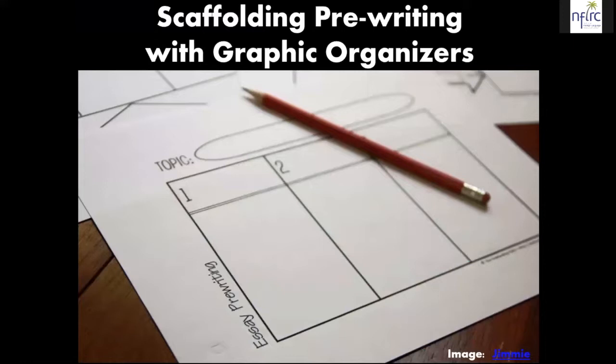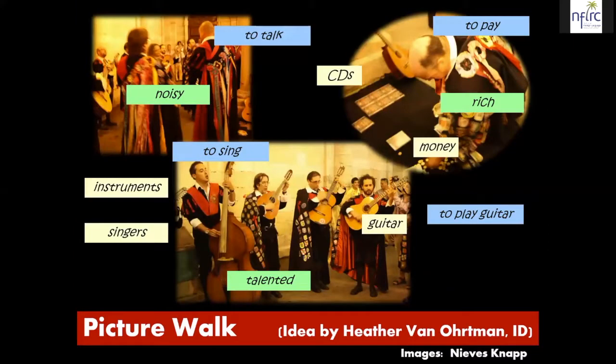Research suggests that brainstorming is one of the most difficult things for learners to do. One easy way to address that is using something like a picture walk, where you give learners different pictures and they take a minute to jot down all of the words they know related to that picture. Then they move to the next picture, a new group comes and adds their words, so that by the time you're done with two or three rounds, each picture has lots of words on it.